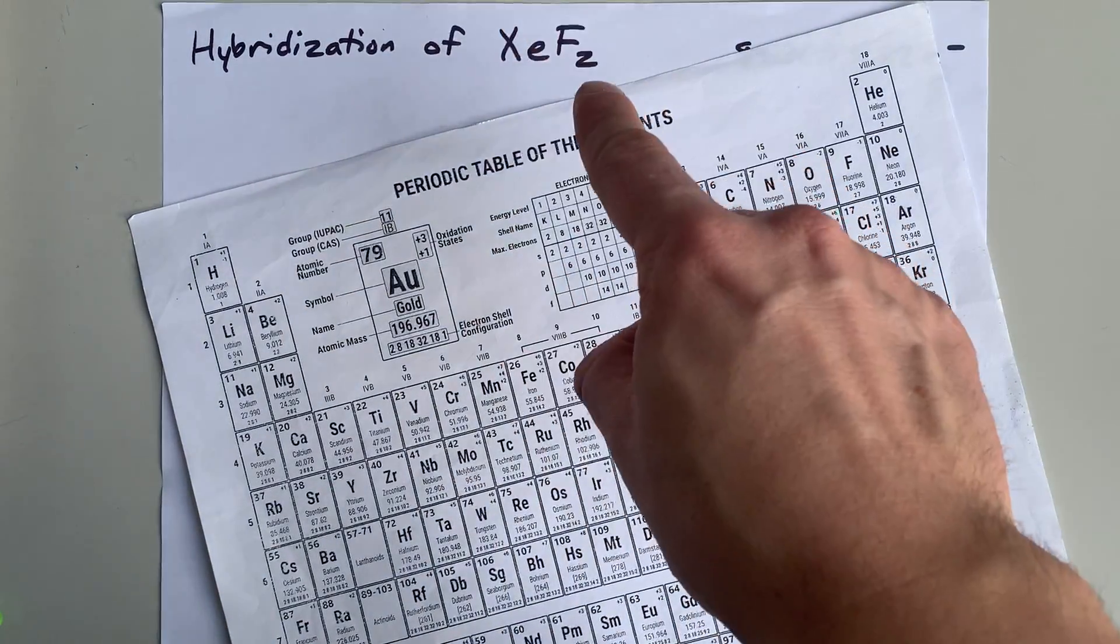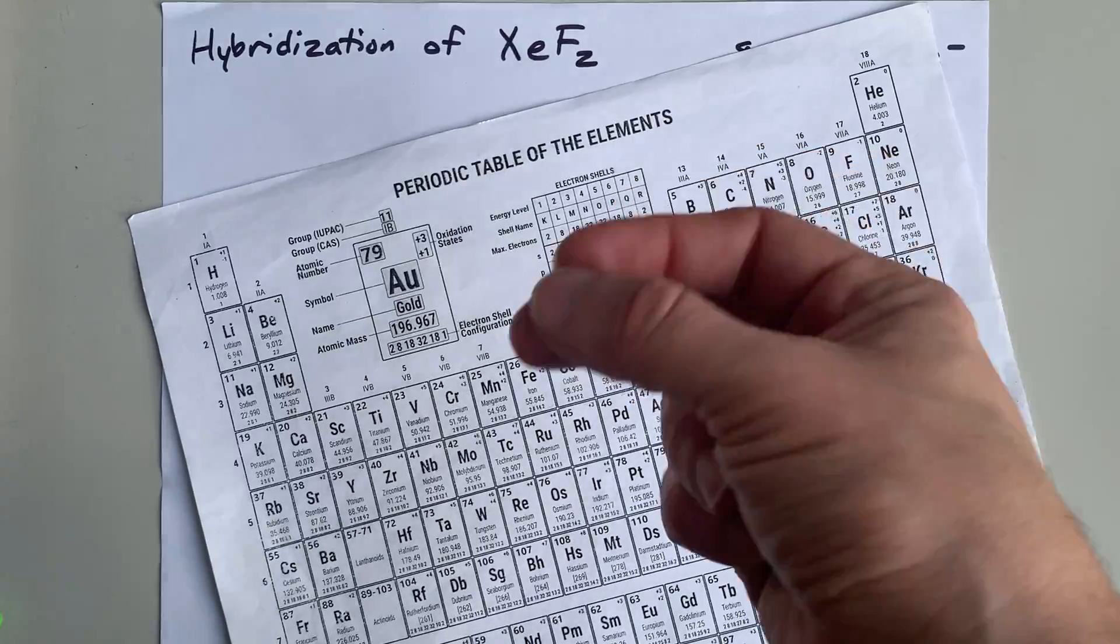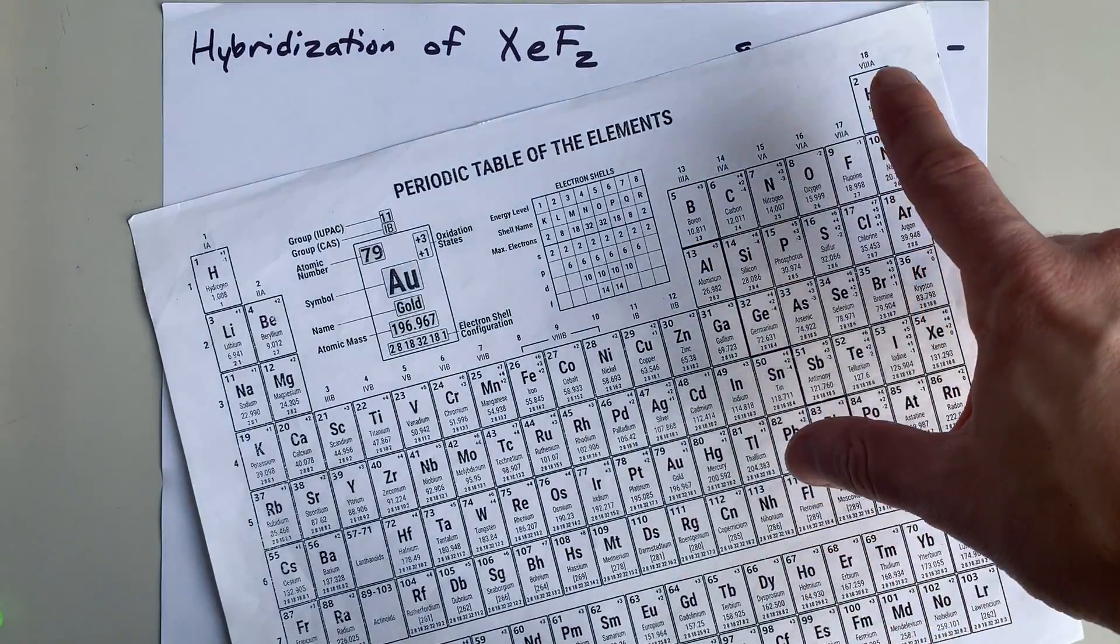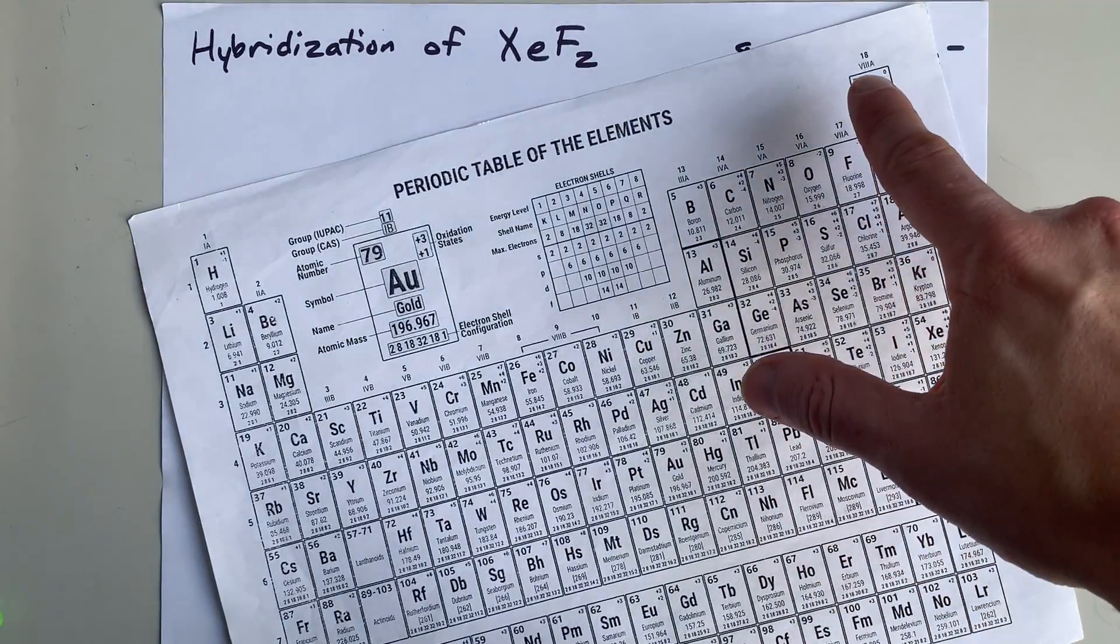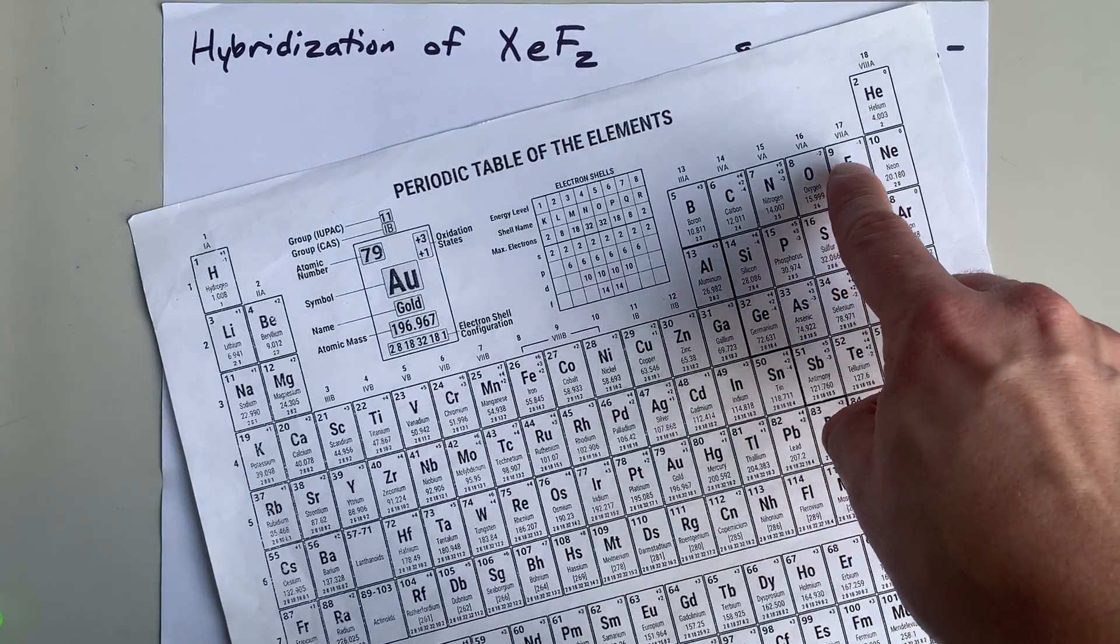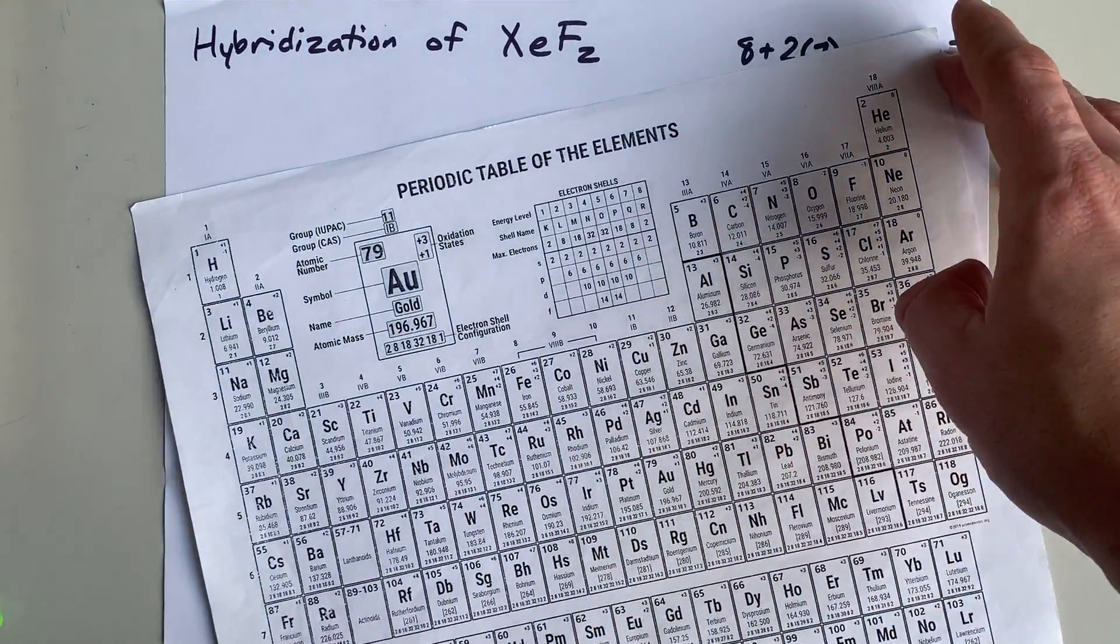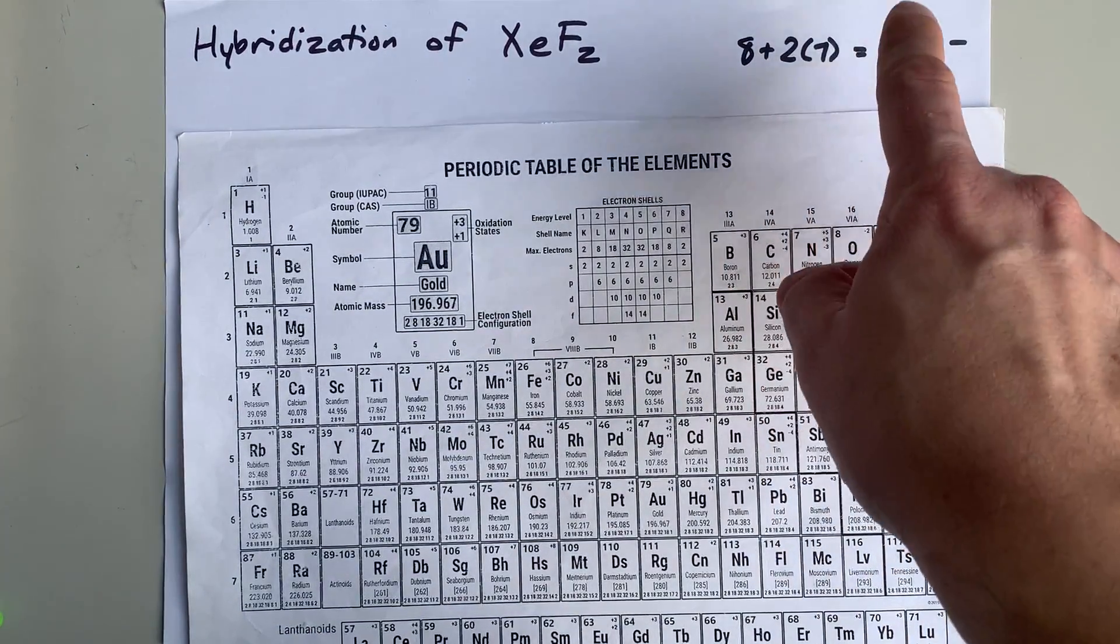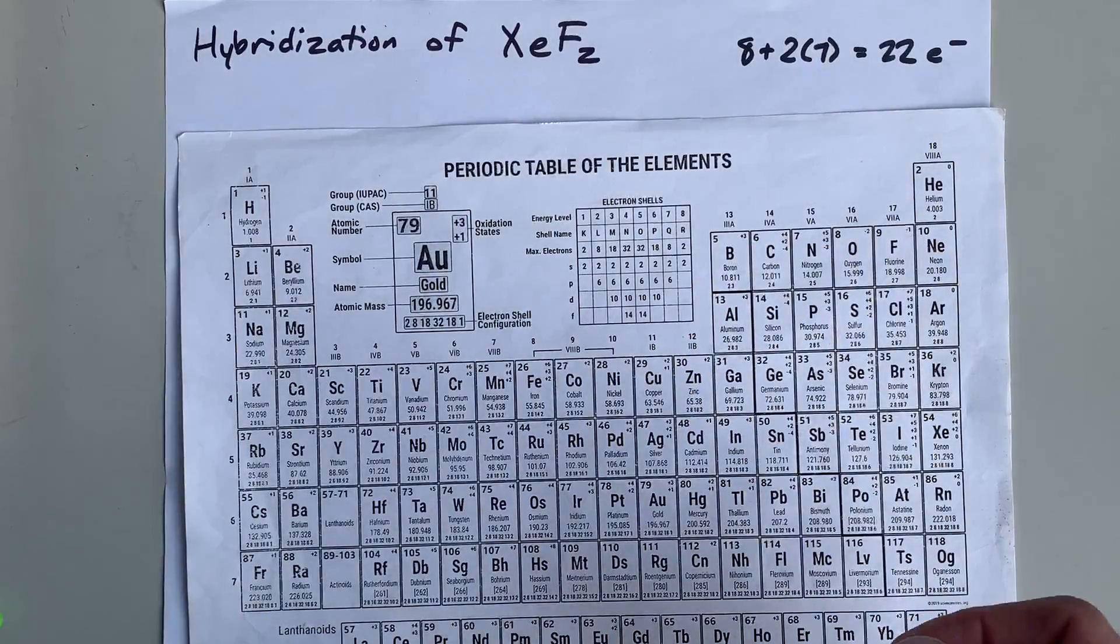Now, this is a molecule, and it would be useful to have the Lewis structure so we know how many hybrid orbitals we're going to need. XE is a non-metal in group 18. It brings 8 valence electrons with it. Fluorine, in group 17, brings 7 valence electrons with it. That's 8 and 2 7s, or 22 total valence electrons.